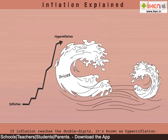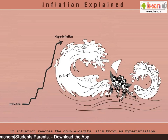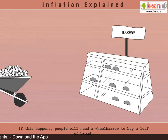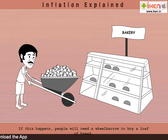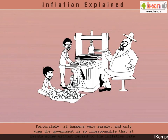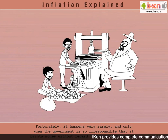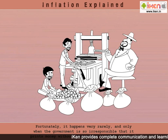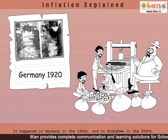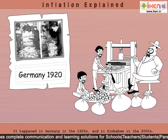This situation is known as spiraling inflation because it spirals out of control. If inflation reaches double digits, it is known as hyperinflation — when people would need a wheelbarrow to buy a loaf of bread. Fortunately, it happens very rarely, and only when the government is so irresponsible that it prints money without regard to the inflation rate. It happened in Germany in the 1920s and in Zimbabwe in the 2000s.